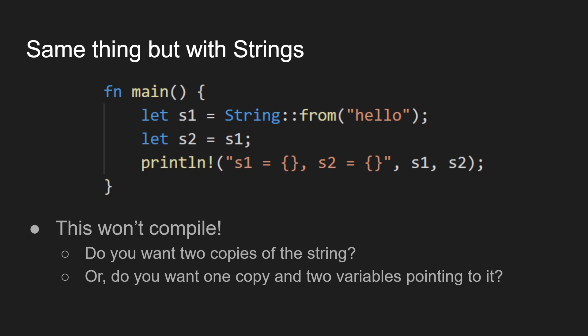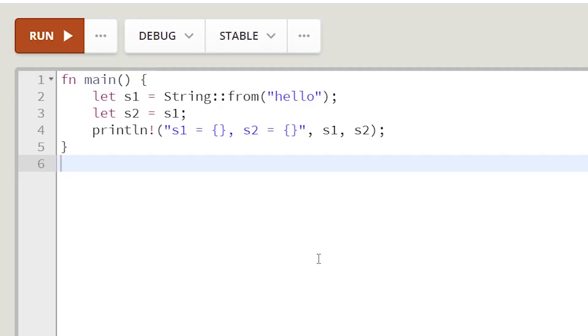Maybe in other programming languages it might compile. But here it won't compile because Rust doesn't know what you want to do. Do you want there to be two copies of the string hello — two locations in memory with H-E-L-L-O? Or do you want S1 and S2 both to point to this one piece of memory which has the word hello? It doesn't know what you want. So do you want two copies, or do you want one copy and two variables pointing to it? It's just to show that you can't compile this program.